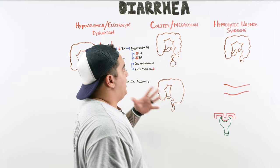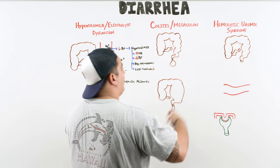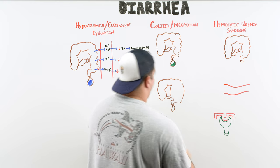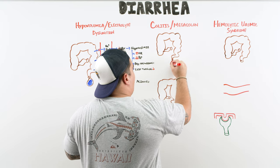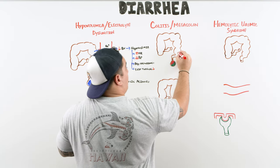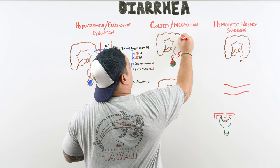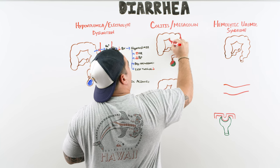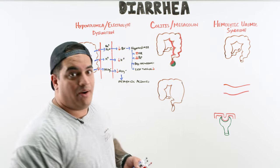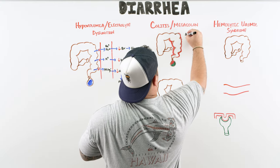Another complication to watch for — particularly in patients with mucoid or bloody diarrhea — is colitis. This suggests colon involvement, and these patients are at risk for intense inflammation of the large intestine. This is especially worrisome with EHEC, Shigella, and C. diff.